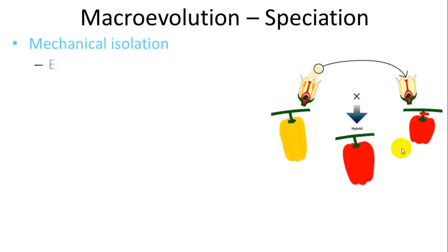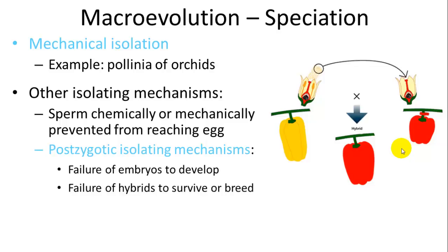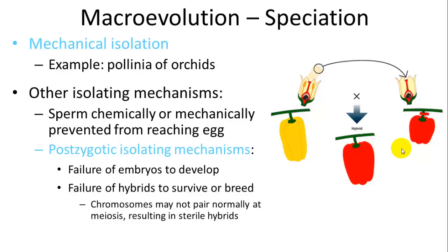Ecological isolation is where smaller factors such as climate or soil play a role in isolating populations and forming species even when they inhabit the same areas. Isolating mechanisms include mechanical isolation where pollen doesn't fit different species, or sperm being chemically or mechanically prevented from reaching the egg. Post-zygotic isolation can also occur: failure of embryos to develop, hybrids unable to survive or breed, or sterile hybrids due to abnormal meiotic pairing.